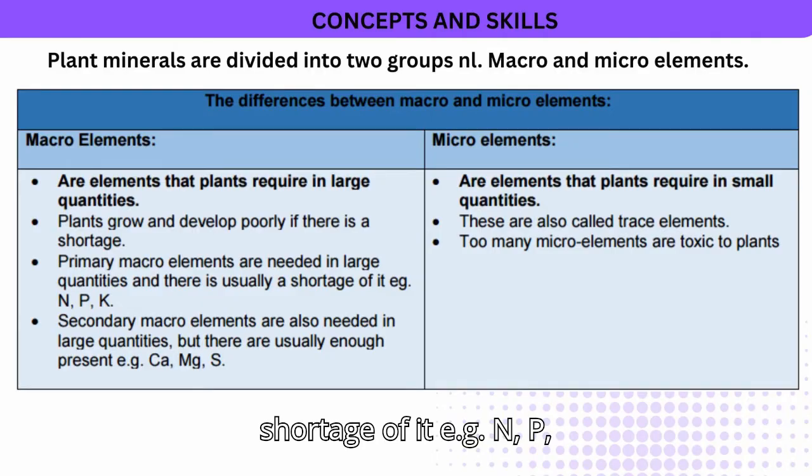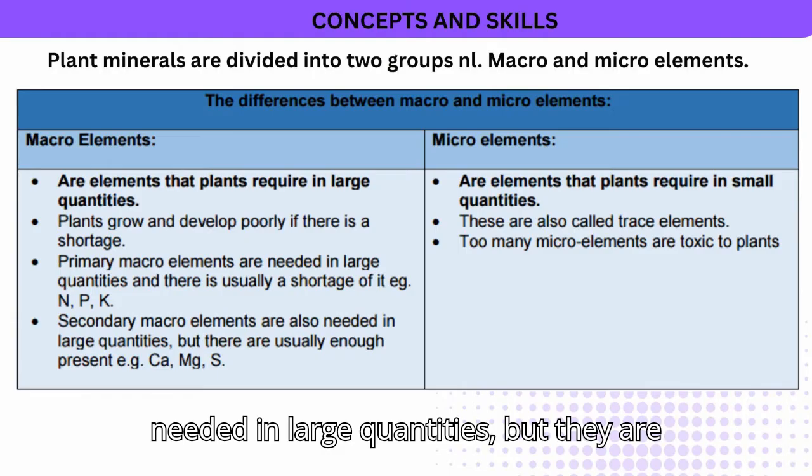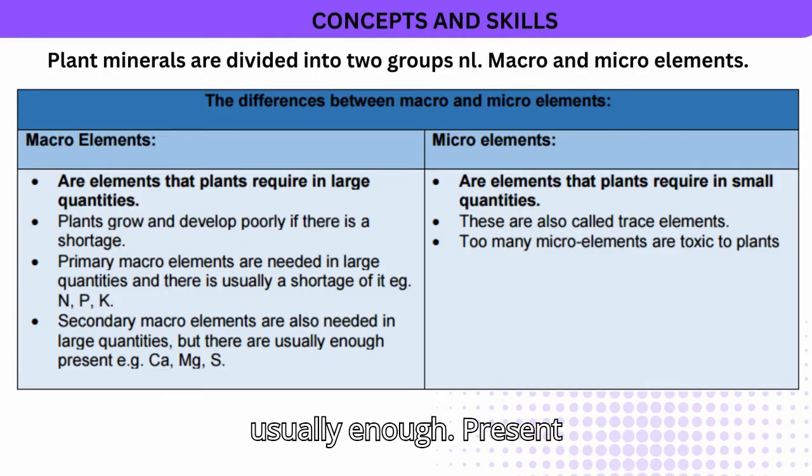Examples of primary macro elements: N, P, K. Secondary macro elements are also needed in large quantities but are usually sufficiently present, e.g. Ca, Mg, S.